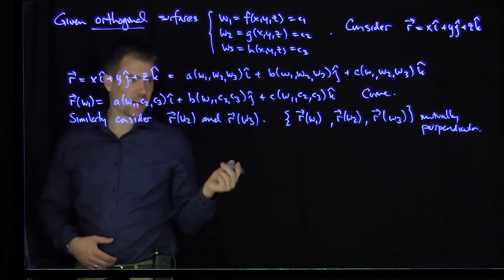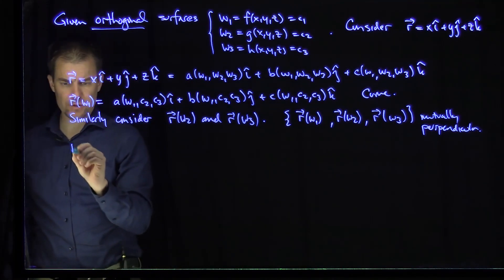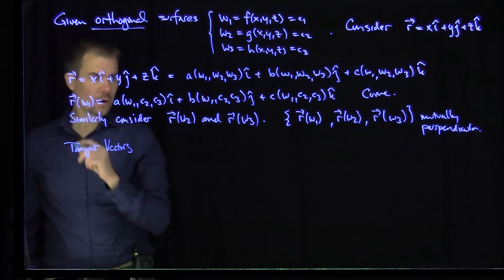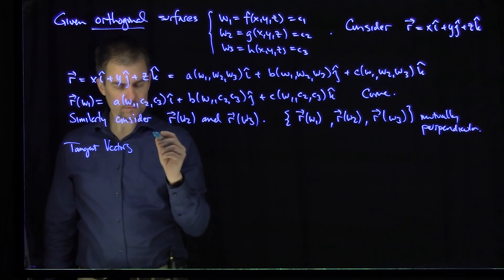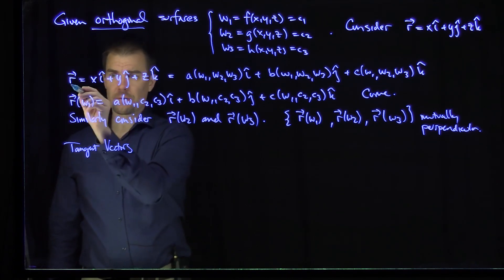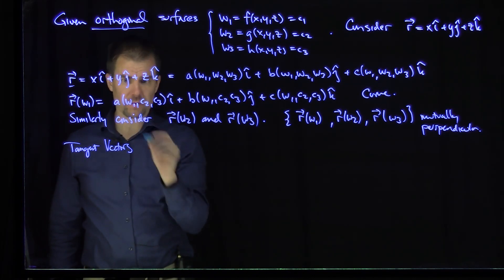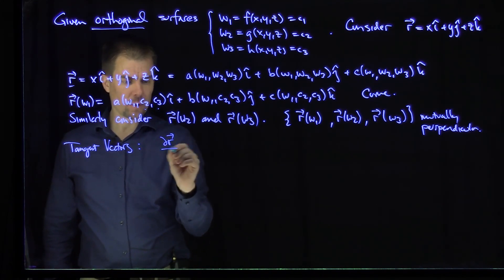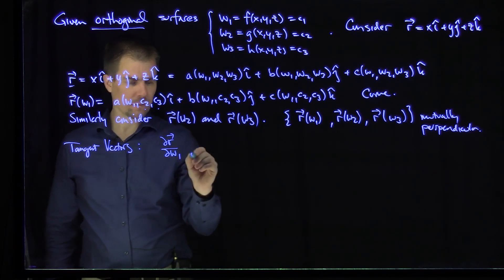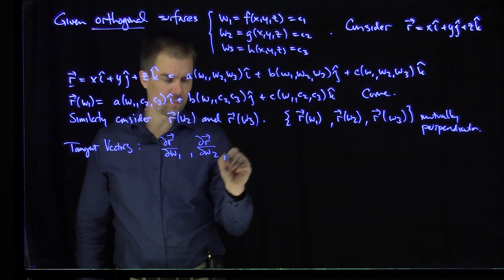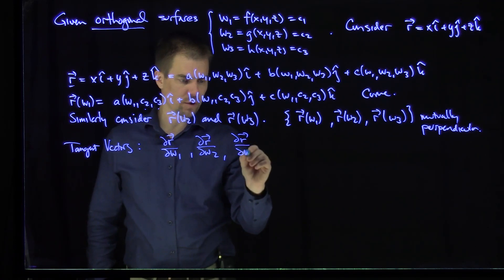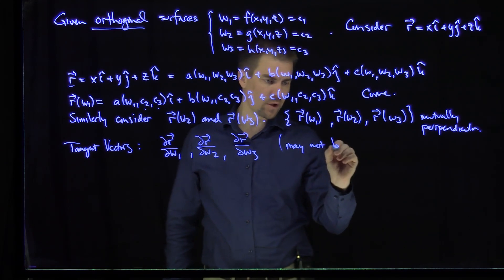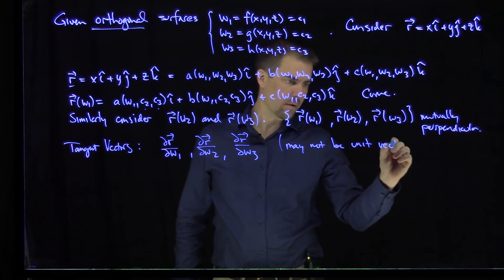Therefore, what I can do is find their tangent vectors. What are their tangent vectors? They are just partial derivatives, because the other variables are constants. The tangent vectors will be ∂r/∂w1, ∂r/∂w2, and ∂r/∂w3. And they may not be unit vectors in principle.